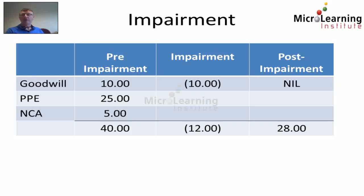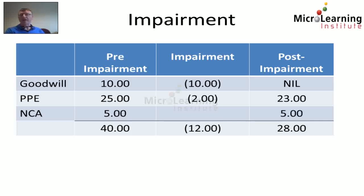With 2 million dollars of impairment remaining to allocate, we allocate that against property plant and equipment, reducing it from 25 to 23 million dollars. The value of net current assets is not affected by the allocation of the impairment.